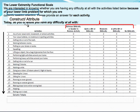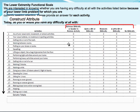This is the Lower Extremity Functional Scale, which is very widely used. It has some of the same attributes as the other scales: 20 questions, hierarchically ranked, with a five-category Likert scale for each item. The construct or attribute is the difficulty associated with the patient's lower limb problem. It doesn't mention pain specifically, so it's independent of pain, but it is about their lower limb problem, however that would be defined.